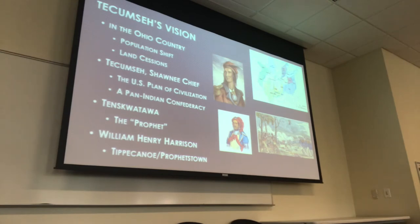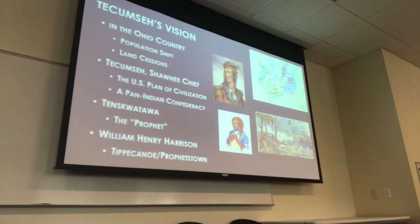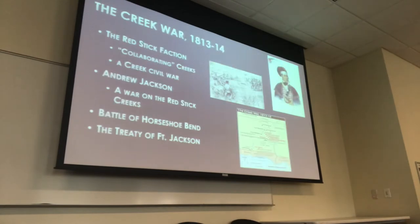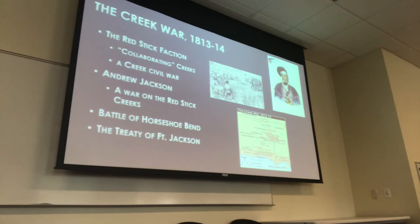When Tecumseh left the region to travel south into Creek country to recruit the Creeks to his pan-Indian confederacy, Harrison took the opportunity to attack Tecumseh's people, temporarily assembled at Prophet's Town under the temporary leadership of Tenskwatawa. The ensuing Battle of Tippecanoe is the beginning of this phase of the War of 1812 in which America is making war on Britain's Indian allies in the region.